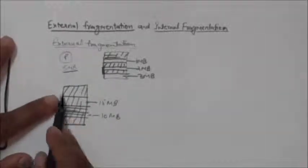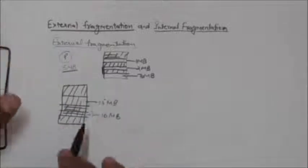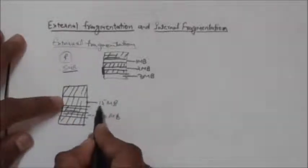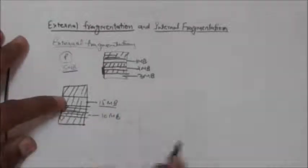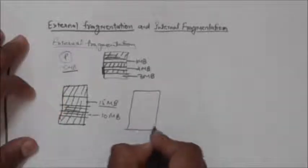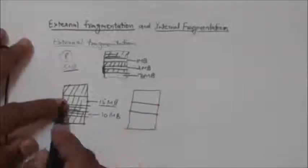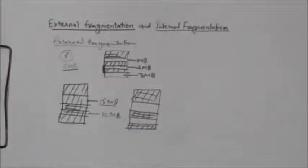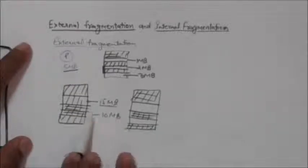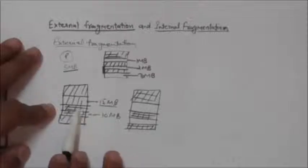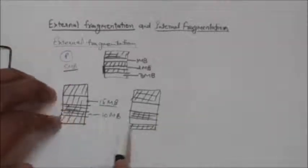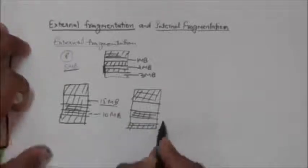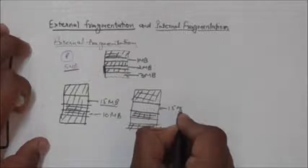Consider main memory that is completely occupied. One process using 15 MB is terminated, so that 15 MB of memory becomes free as a single hole. Another process using 10 MB is also terminated, so that 10 MB becomes free as a single hole. Now in main memory we have two holes: one of 15 MB and one of 10 MB.